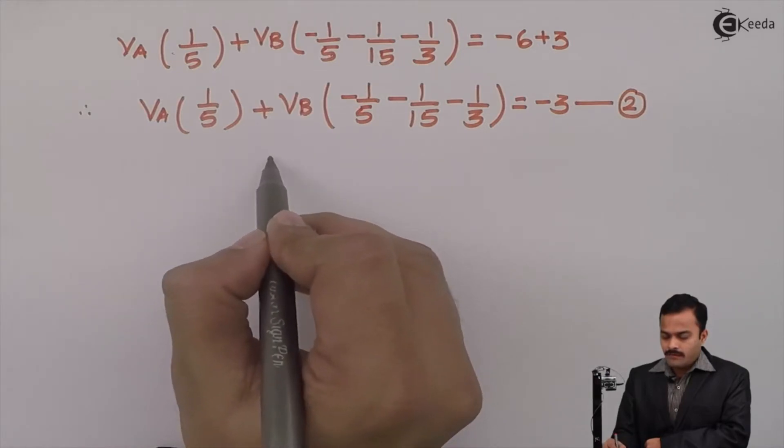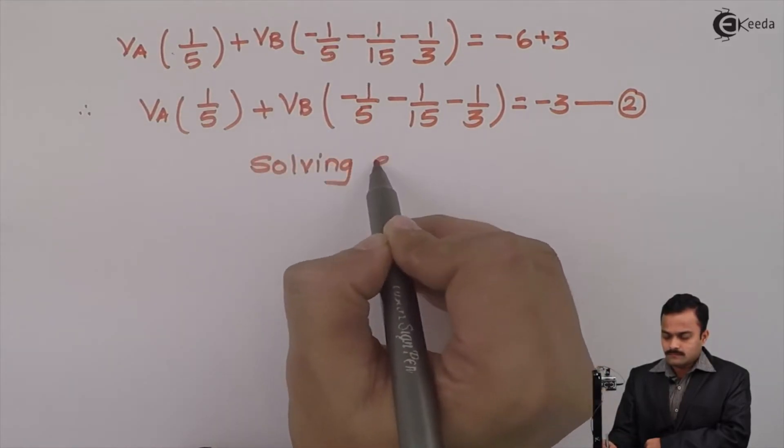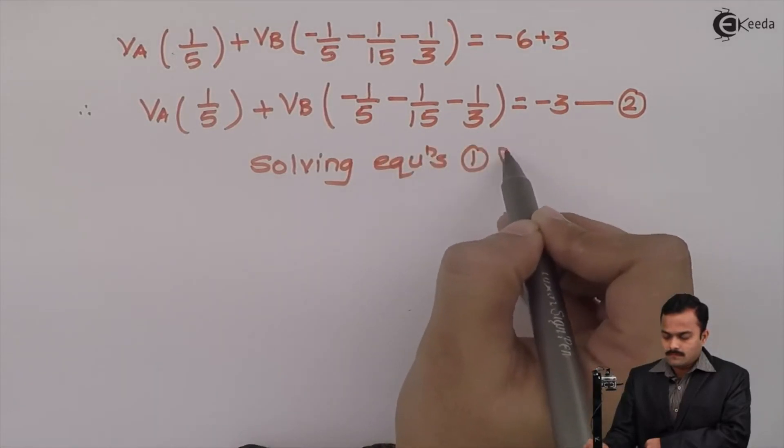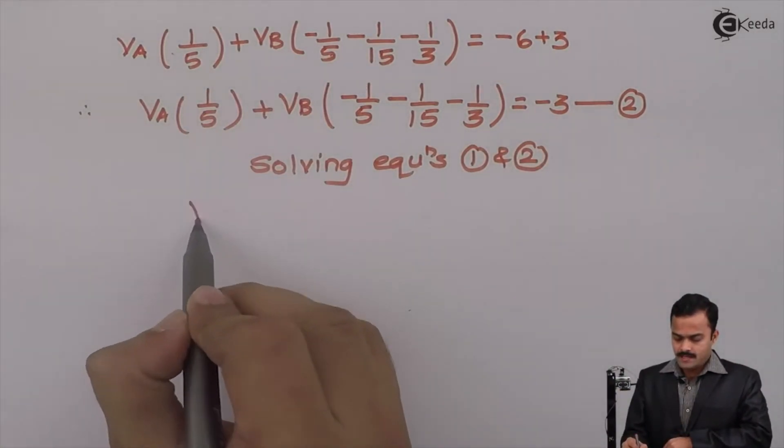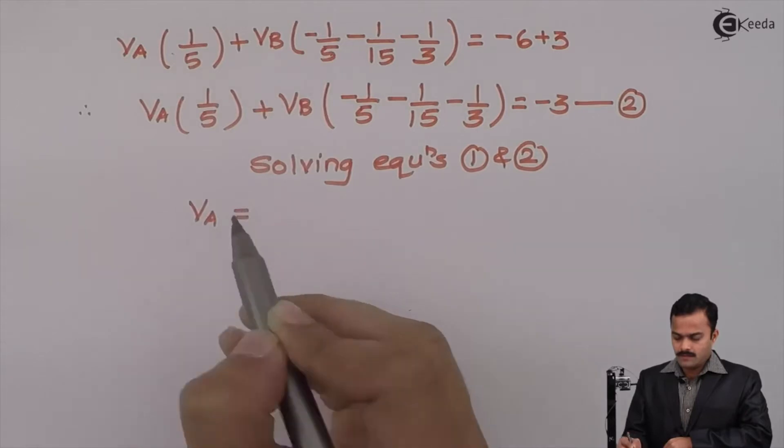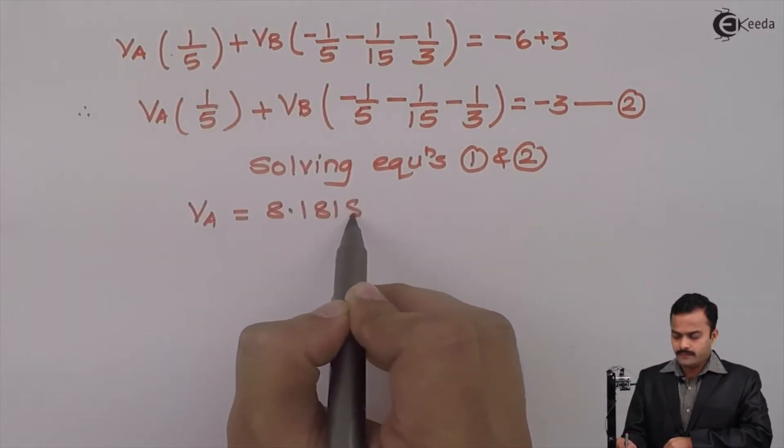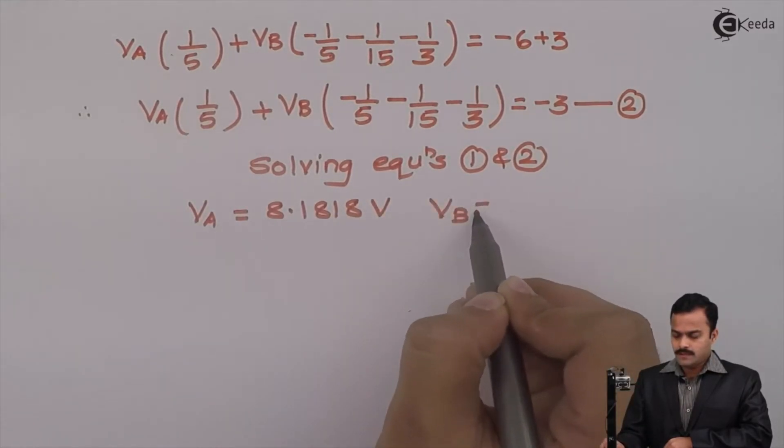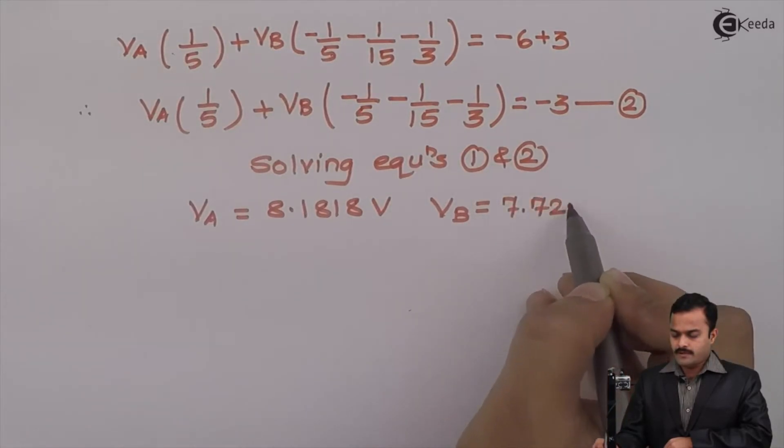And solving equations 1 and 2, I will get VA equals 8.1818 V and VB equal to 7.7273 V.